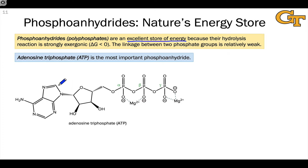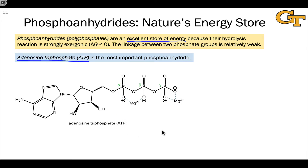The most important phosphoanhydride is surely adenosine triphosphate, or ATP. ATP is a big molecule, but it helps to break it out into parts to understand how it functions. It really has two halves, and as drawn here, the left half solely serves the purpose of molecular recognition — a recurring structural unit in cofactors that can be recognized by a variety of enzymes.